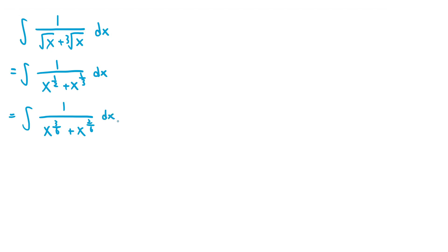So now we're all set to do the substitution: u equals x to the power of 1/6. This is what we do when we have an integrand with multiple fractional exponents and they have been rewritten to have the same denominator — we substitute u equals x to the power of 1 over the least common multiple. In this case that was 6, so we substitute u equals x to the power of 1/6.